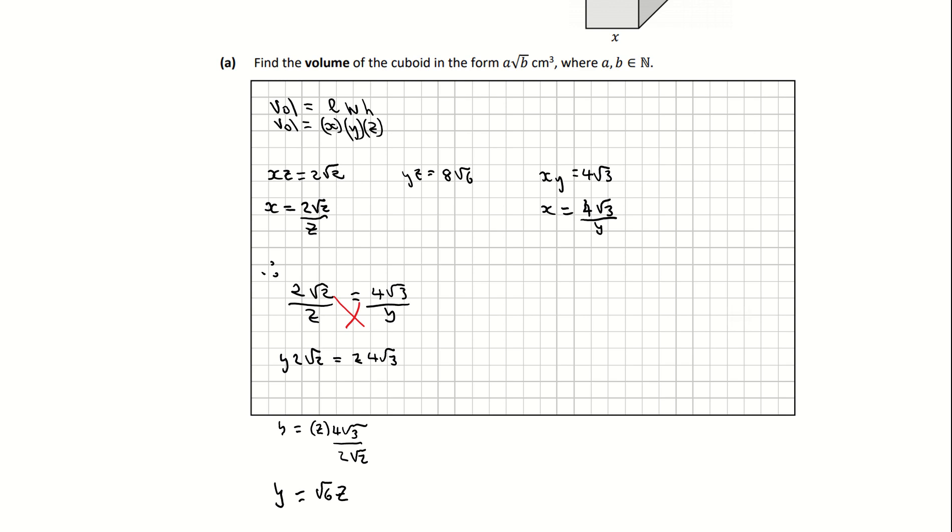Now I'm going to come back to this middle section: y times z equals 8 root 6. I'm going to make a substitution here. I'm going to substitute my value for y that I got. My value for y is root 6 z, so I'm substituting my y for root 6 times z.